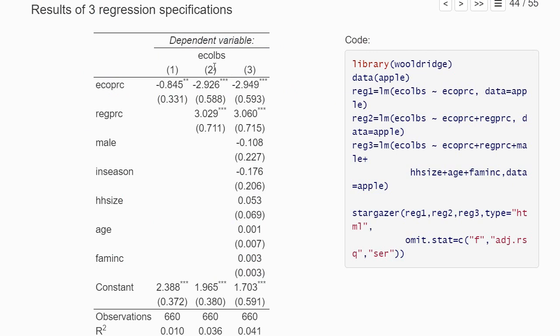Our dependent variable is the amount of ecological apples the household bought. In the first regression, we only regress on the price of ecological apples. In the second regression, we add the price of regular apples.